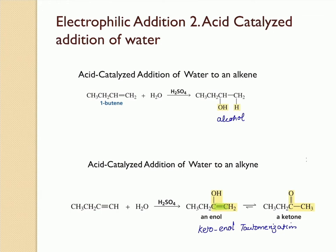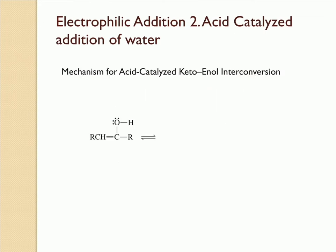In the enol form, you have a double bond between carbon and carbon, but in the keto form, you have a double bond between carbon and oxygen. Also, the enol form has a hydrogen attached to oxygen, but in the keto form you have an extra hydrogen attached to the carbon that is adjacent to the carbonyl group.